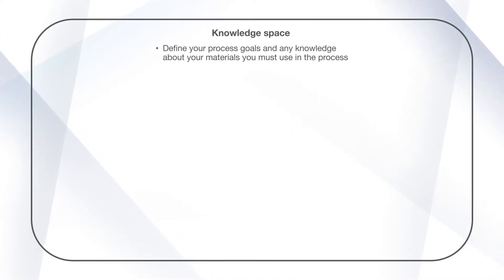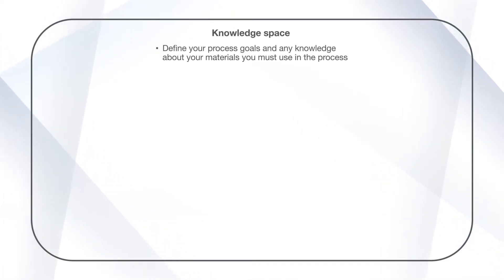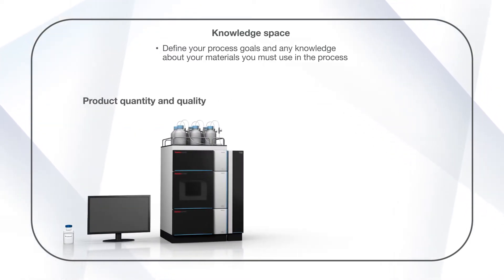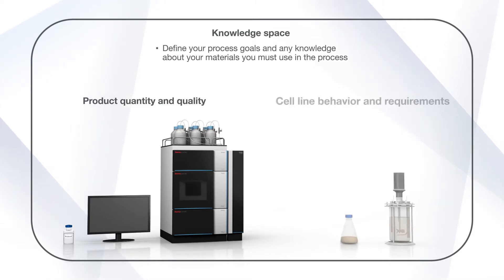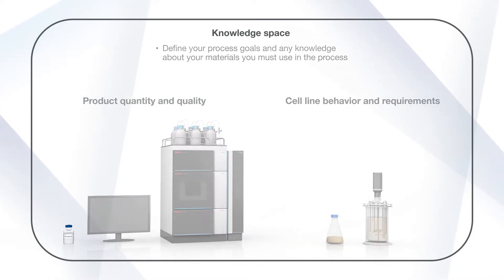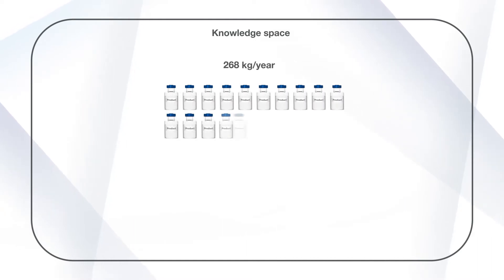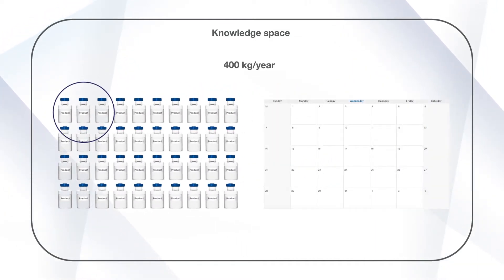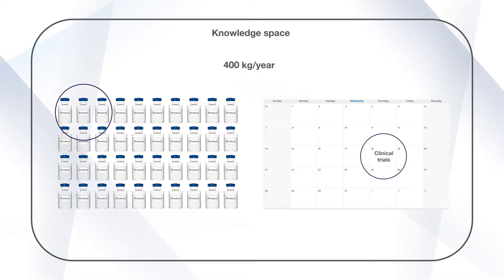In the knowledge space, you define your process goals and any knowledge about your materials you must use in the process. This begins by determining how much product and what level of quality is needed, as well as known cell line behavior and requirements. A first step is to establish how many kilograms of product are needed annually, as well as how much product is needed for clinical trials and how soon.